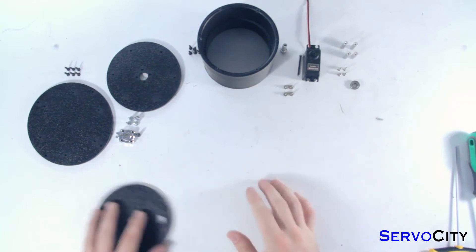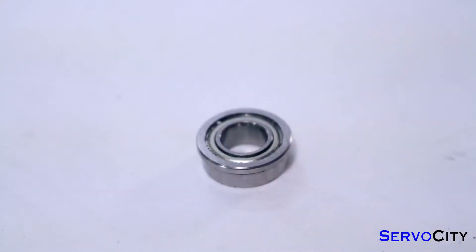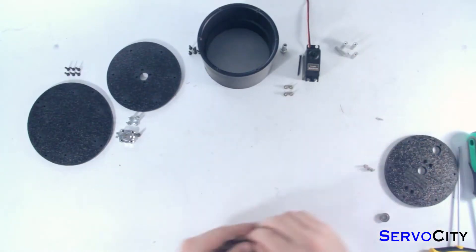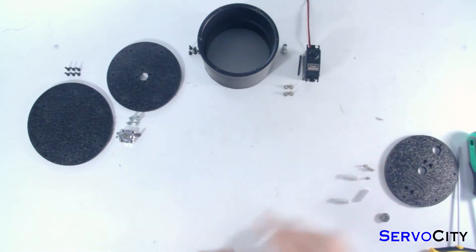First step, you grab the ABS plate that has two large holes in it, a quarter inch precision flange ball bearing, four 4-40 x 3/8 inch flat head machine screws, and four 3/4 inch round standoffs.